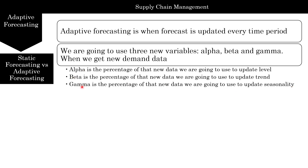Alpha, beta, and gamma are not level, trend, and seasonality — they are the percentage of new data you are going to use to update level, trend, and seasonality. A lot of times in presentations, people say alpha is 10%, so that's 10% level. It is not 10% level. It is 10% of new data that you're going to use, which means 90% of the level is going to be old data, and only 10% of new data is used to update the level.